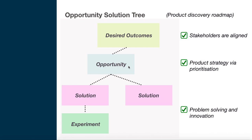Teresa Torres, in one of her talks, explains why she didn't name this level the 'problem space' — because some people have trouble defining an opportunity as a problem. She felt that calling it an 'opportunity' is more inclusive, covering problems, needs, wants, and desires. Ultimately it gives teams room to look for different alternative solutions, innovate, and come up with the best one.